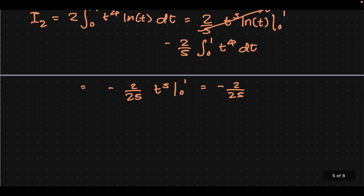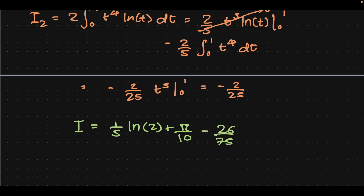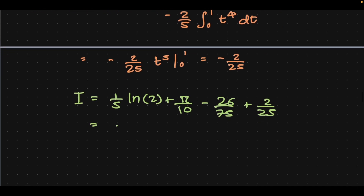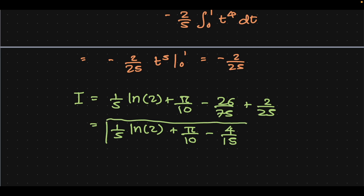There we go. We can finally combine everything together to give us the value of I. We just subtract I2 from I1. This simplifies significantly to give us 1 fifth natural log of 2 plus pi over 10 minus 4 fifteenths, which is the final answer.